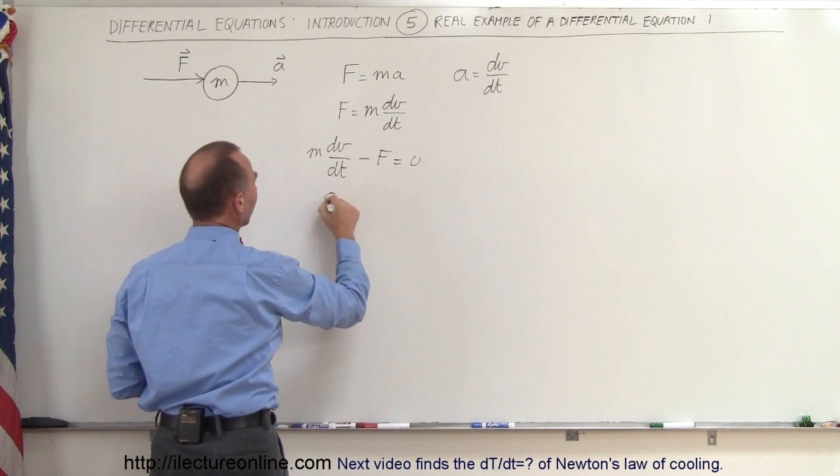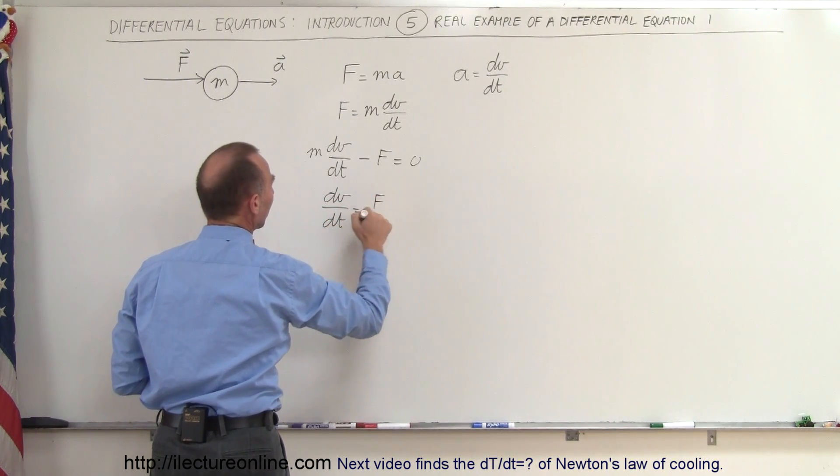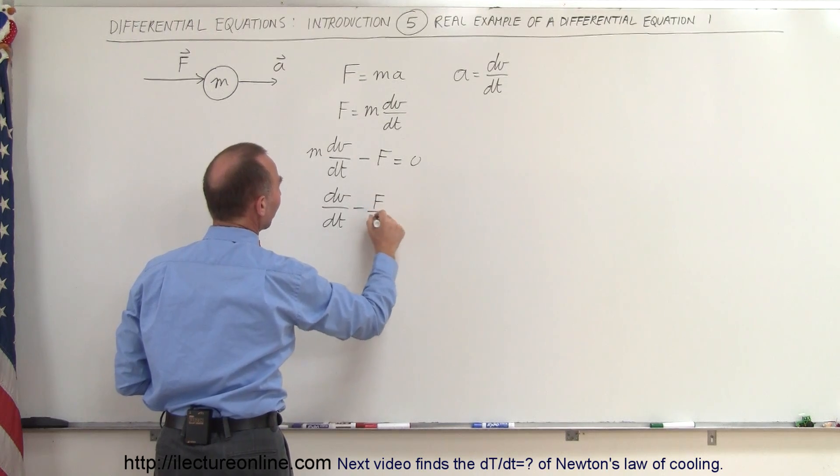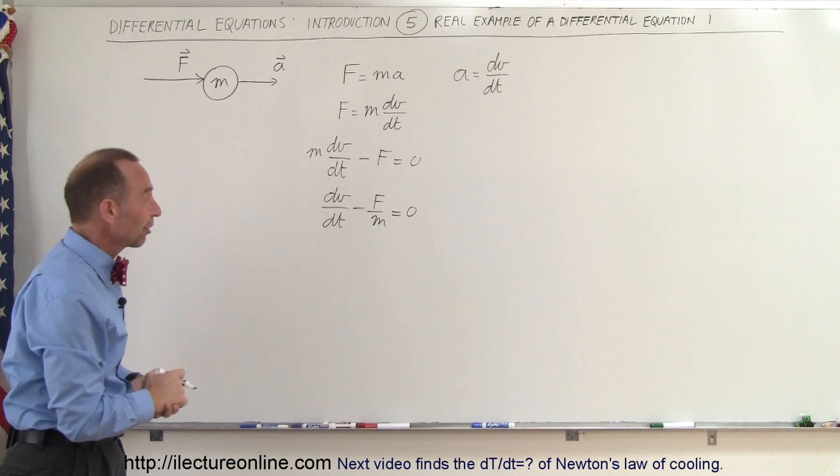And then dividing both sides by m, we get dv/dt minus f over m is equal to 0. So that would be a classic first-order differential equation.